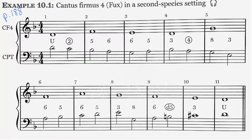Take a look at example 10.1 on page 188. This is an example of second species counterpoint. Second species basically means that there are two notes for every given note. The Cantus firmus is in whole notes. The counterpoint below it is in half notes.